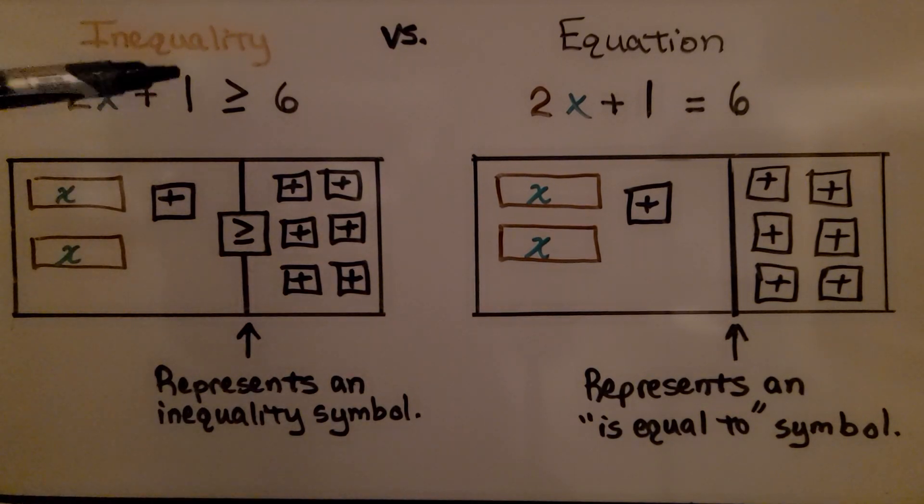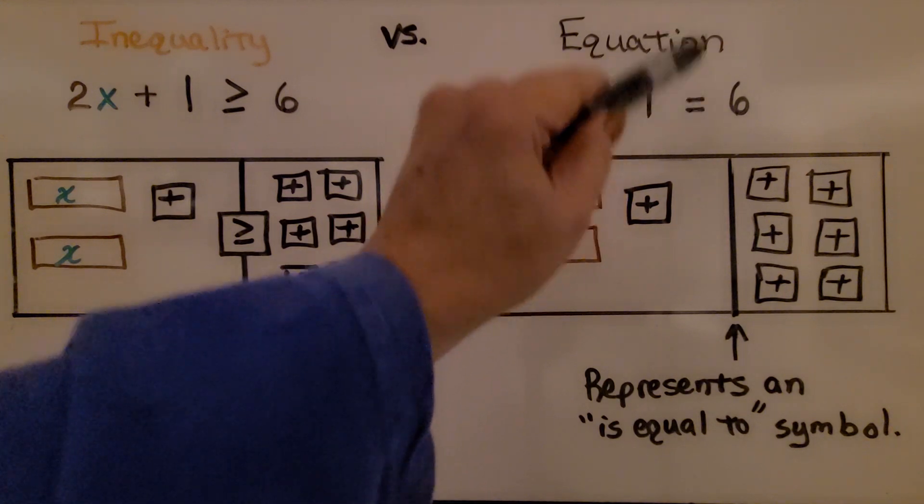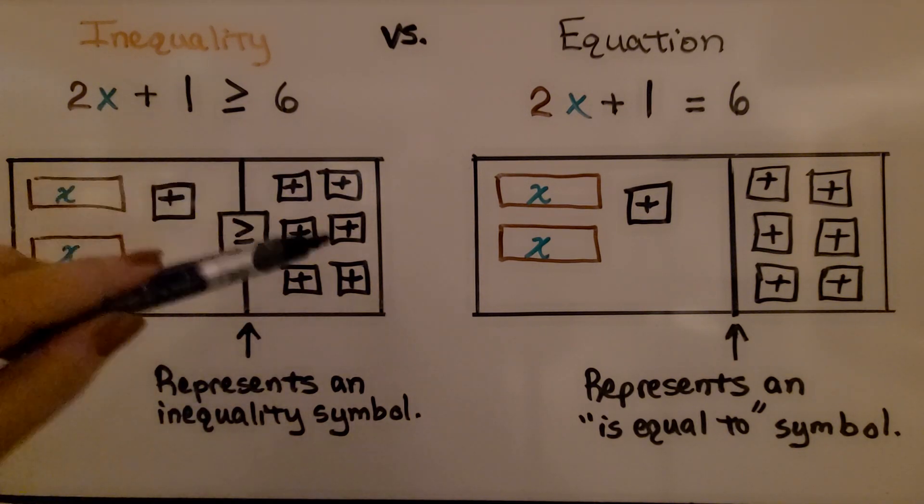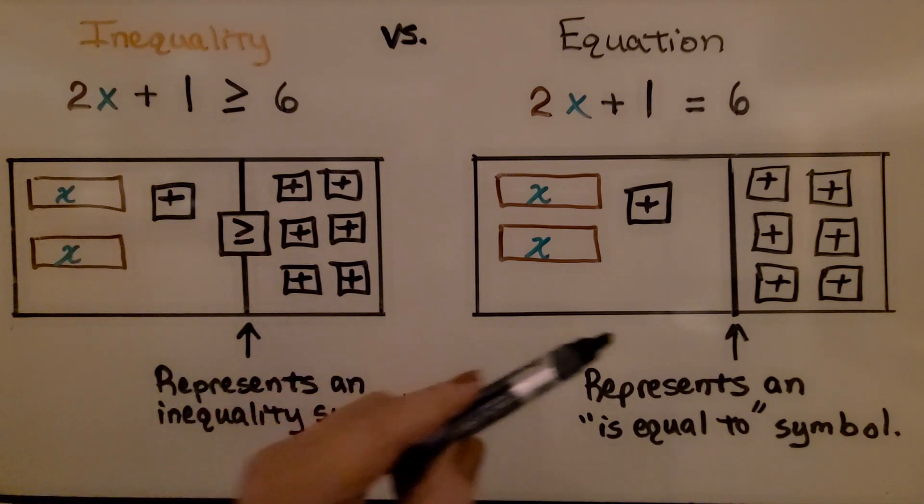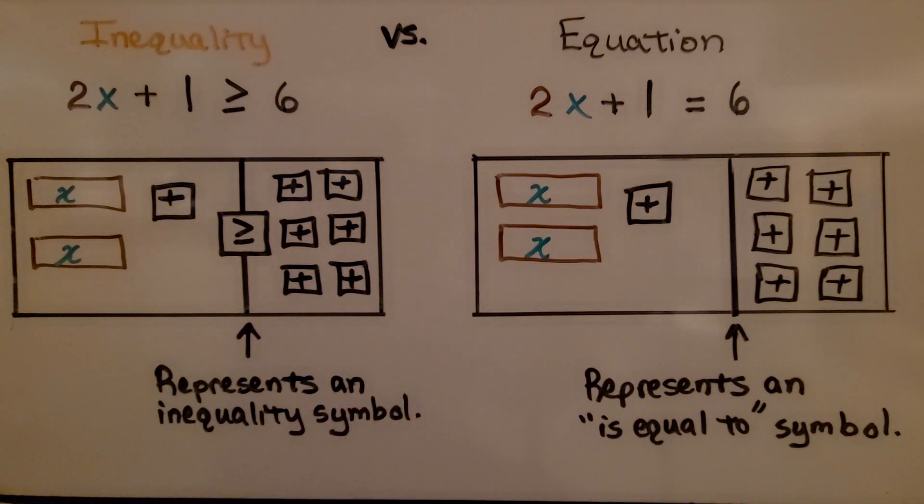Now, we can look at the symbol and tell that this is an inequality, this is an equation. When we have our mat for our inequality, this line in between the two sides represents the inequality symbol. For an equation, the line represents an is equal to symbol.